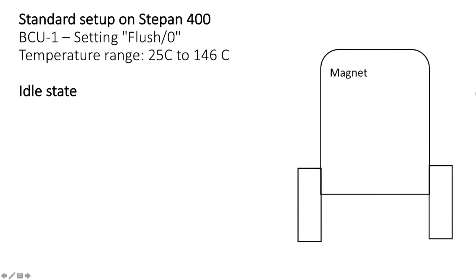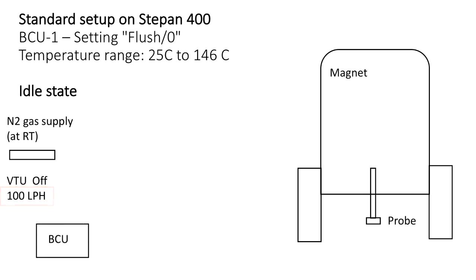In the idle state, we have a magnet and a probe and the supply of room temperature nitrogen gas. VTU is off and supplies instrument with 100 liters per hour of gas, which first directs to the BCU, Brooker cooling unit, which is currently off in a flush or zero position, essentially just supplying room temperature gas to the probe. The probe passes gas towards the heater. The heater is off and it supplies room temperature air to the sample. This is how we work at room temperature.